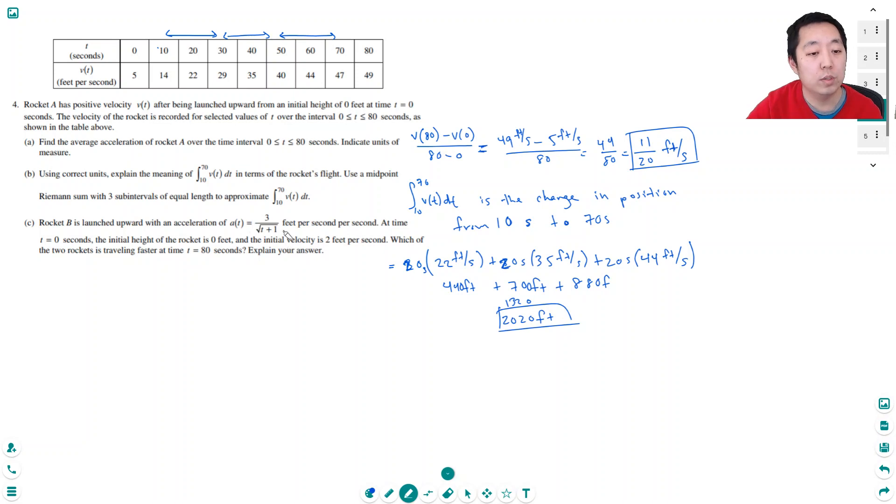So we know that at 80 seconds, rocket A is moving at 49 feet per second. So I want to compare it to rocket B. The velocity of rocket B is the integral of a of t dt. I want to do the integral of 3 over the square root of t plus 1 dt.